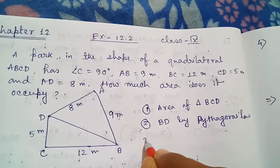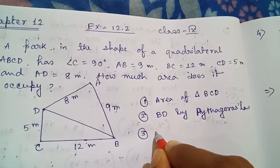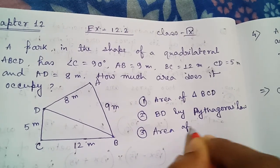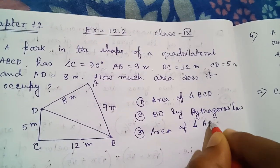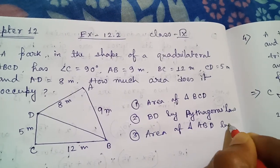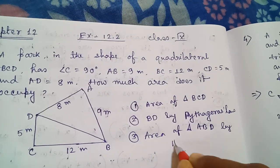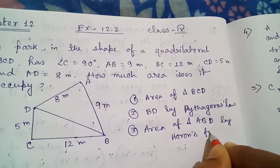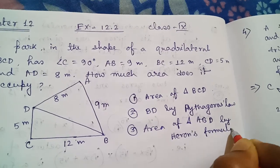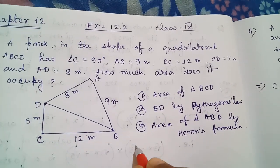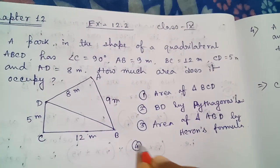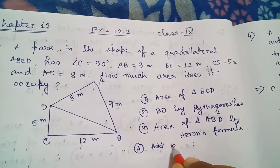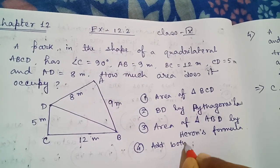Number three, find the area of triangle ABD by Heron's formula. Number four, add both areas and that will be the answer.